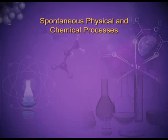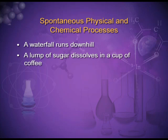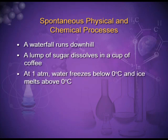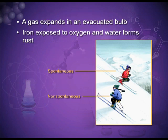Spontaneous physical and chemical processes include: a waterfall running downhill, a lump of sugar dissolving in a cup of coffee, water freezing below zero degrees Celsius and ice melting above zero degrees Celsius at one atmosphere, heat flowing from a hotter object to a colder object, and iron forming rust when exposed to oxygen and water. All these processes are spontaneous — they have the tendency to take place on their own, and the reverse of all these processes requires an external agency.